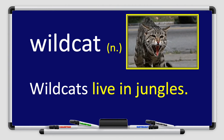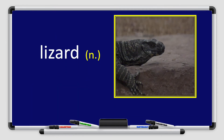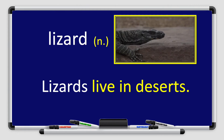Great job boys and girls. We have the word lizard. Lizard. Look at the picture — it's a lizard. Repeat after me: lizard. Lizard is a noun. Let's use it in a sentence: Lizards live in deserts.